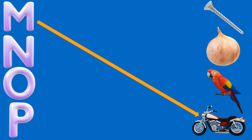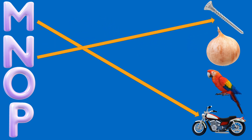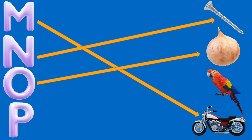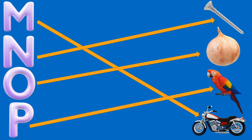And you have 5 seconds to guess. Here we go. M is for motorbike. N is for nail. O is for onion. And P is for parrot.